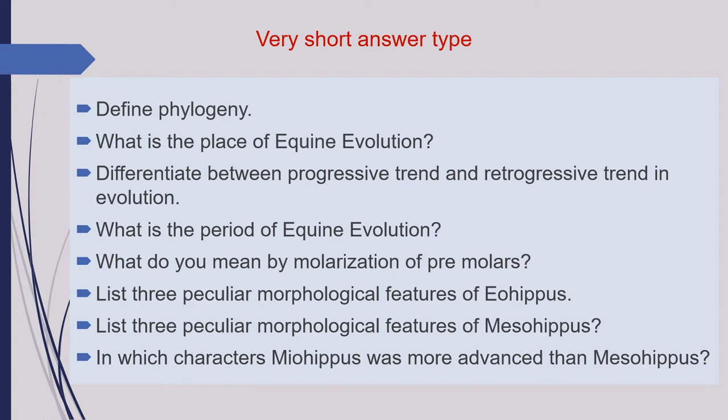Next is: what do you mean by molarization of premolars? Next is: list three peculiar morphological features of eohippus. Next is: list three peculiar morphological features of mesohippus. Next is: in which characters myohippus was more advanced than mesohippus?